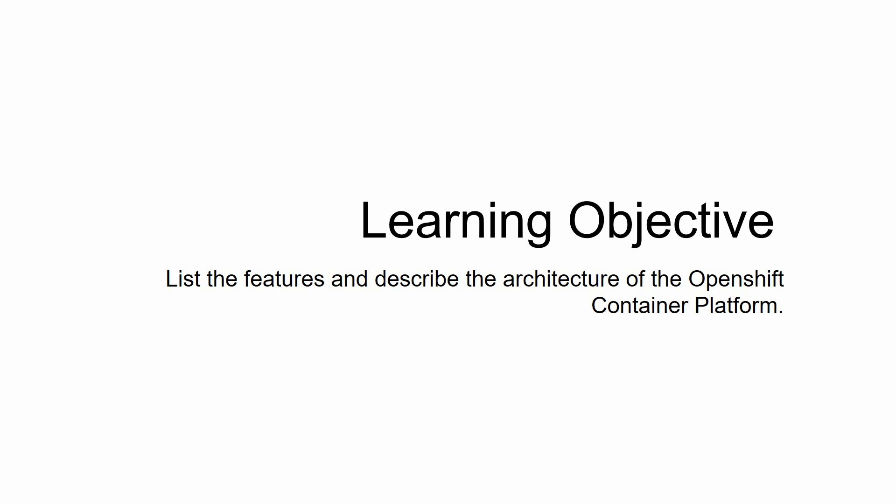Hi friends, welcome back to the OpenShift training series. Finally, after doing a lot of prerequisites — containers, Podman, images, and hands-on examples — now is the time to introduce what is OpenShift Container Platform. This is session 10. The program is structured so that when you reach this point, you already have hands-on experience from previous lectures. You must go through those nine lectures before watching this session. My name is Ram, brought to you by skillpedia.com.